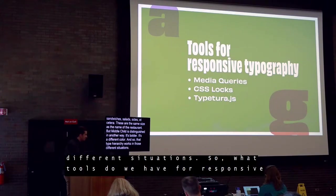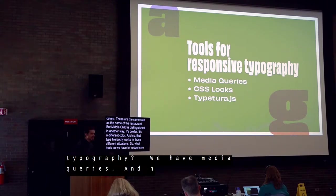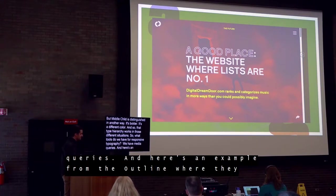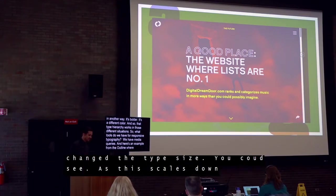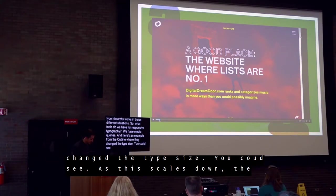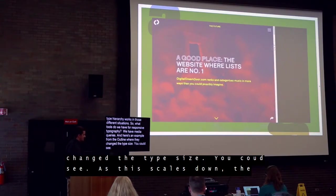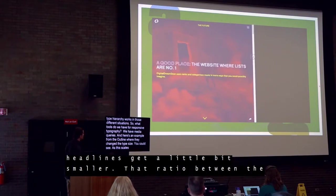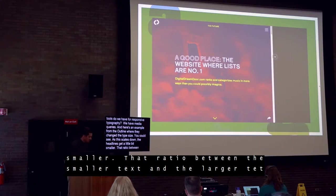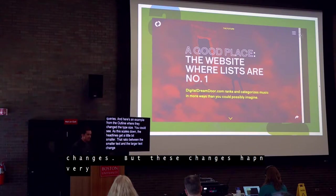So what tools do we have for responsive typography? We have media queries. Here's an example from The Outline where they change the type size — as this scales down, the headlines get a little bit smaller, and that ratio between the smaller text and the larger text changes. But these changes happen very abruptly.